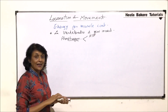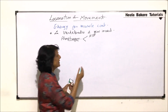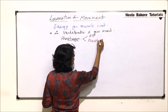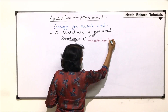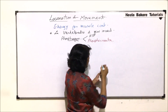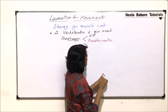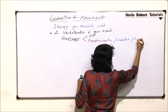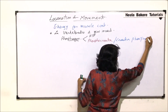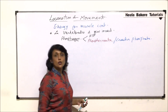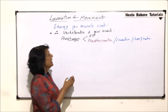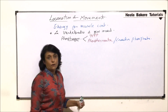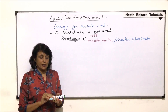The second phosphagen is known as phosphocreatine or creatine phosphate. These are the two substances which provide energy for muscle contraction: ATP and creatine phosphate.